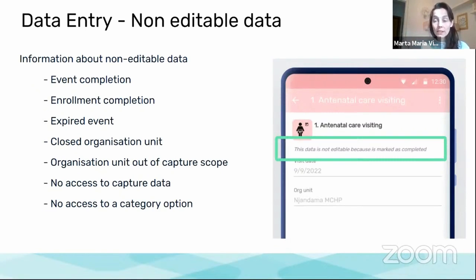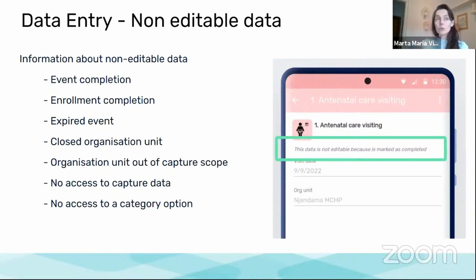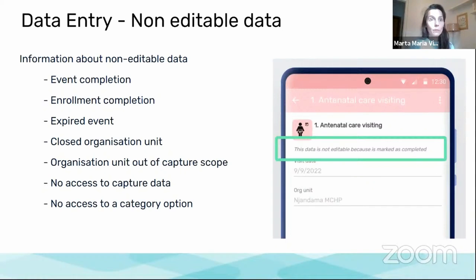There are a number of reasons in DHIS2 for having data that can be seen, especially for a non-user in the Android app, but that cannot be edited: because the event or the enrollment are complete, because the edit period expired based on configuration, because the org unit is closed, or because the user is out of the capture scope or doesn't have capture access to the particular program.